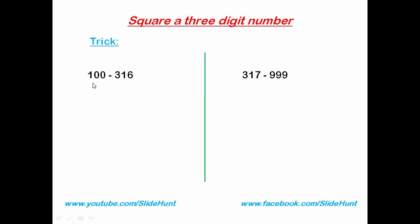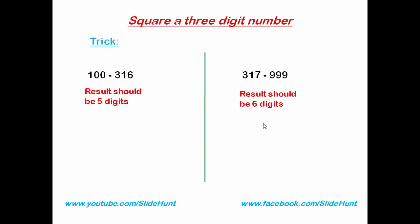If you square any number from 100 to 316, the result should be 5 digits. If you square any number from 317 to 999, the result should be 6 digits. For example, squaring 115 gives 13225 — you can see the result is 5 digits.